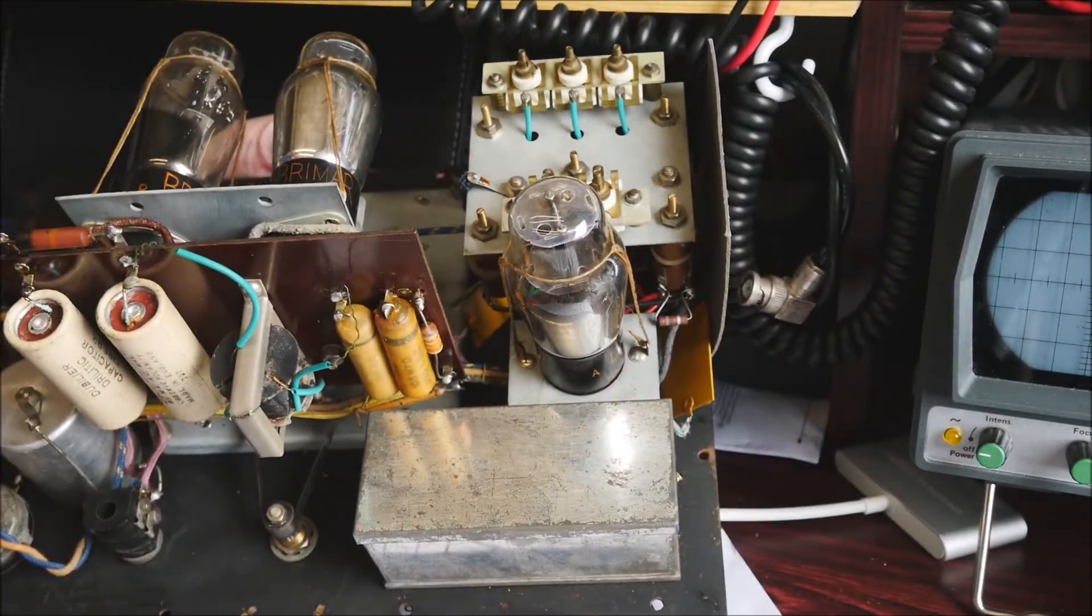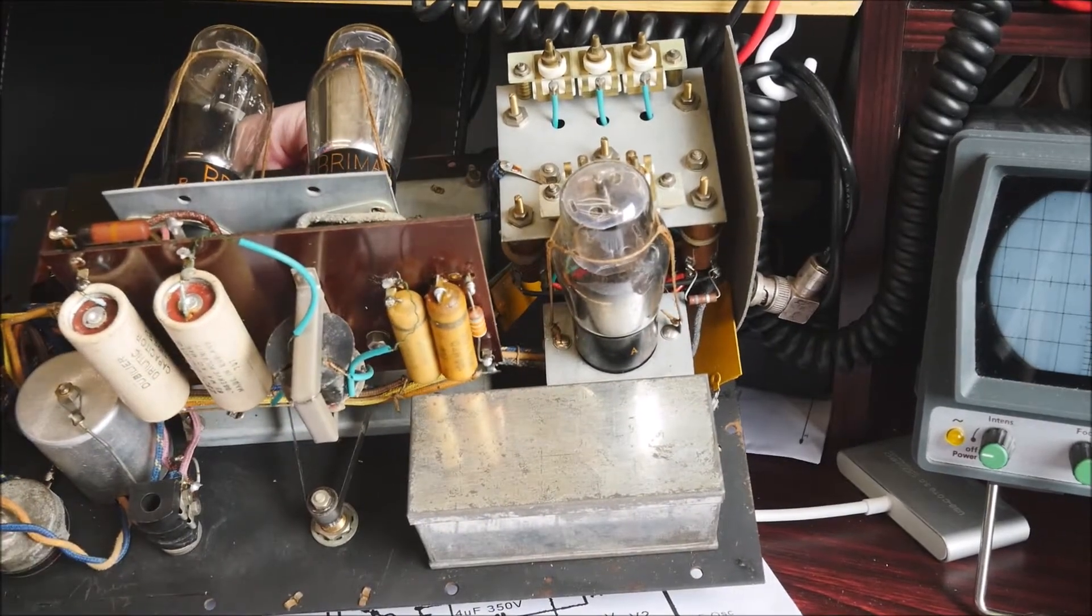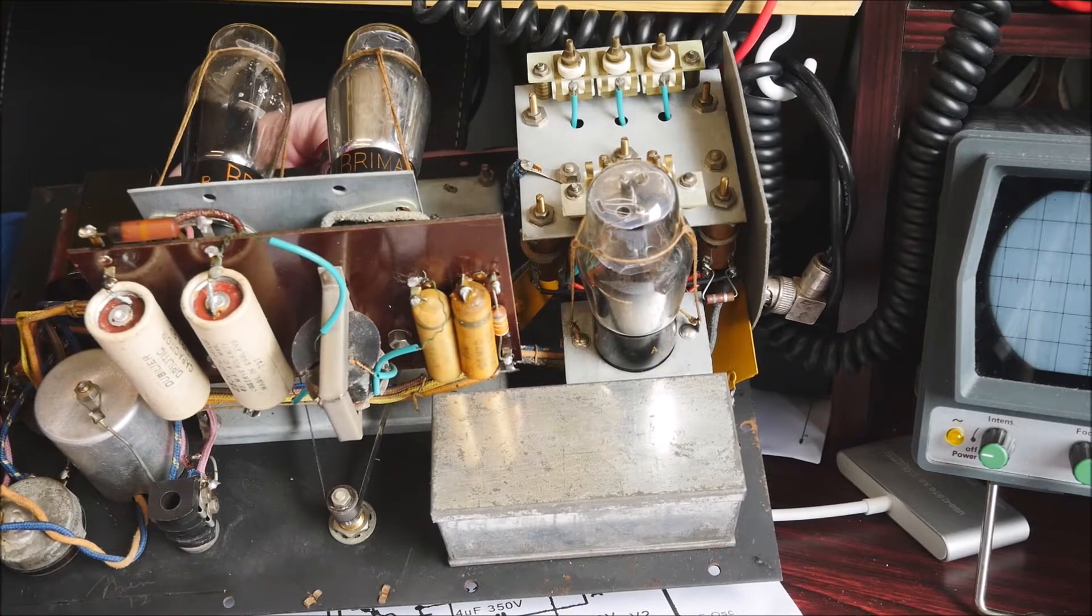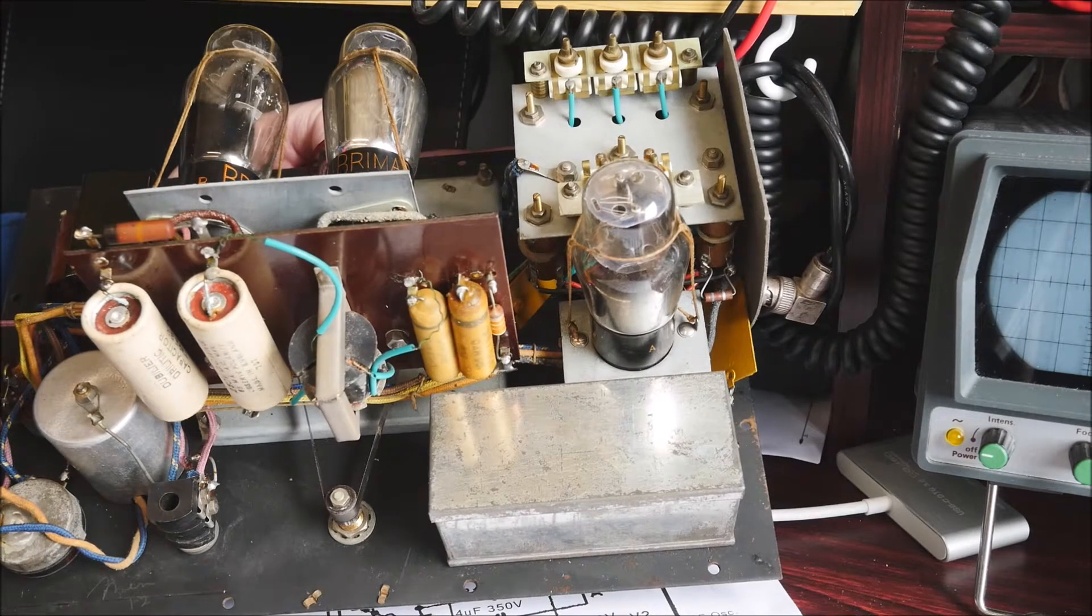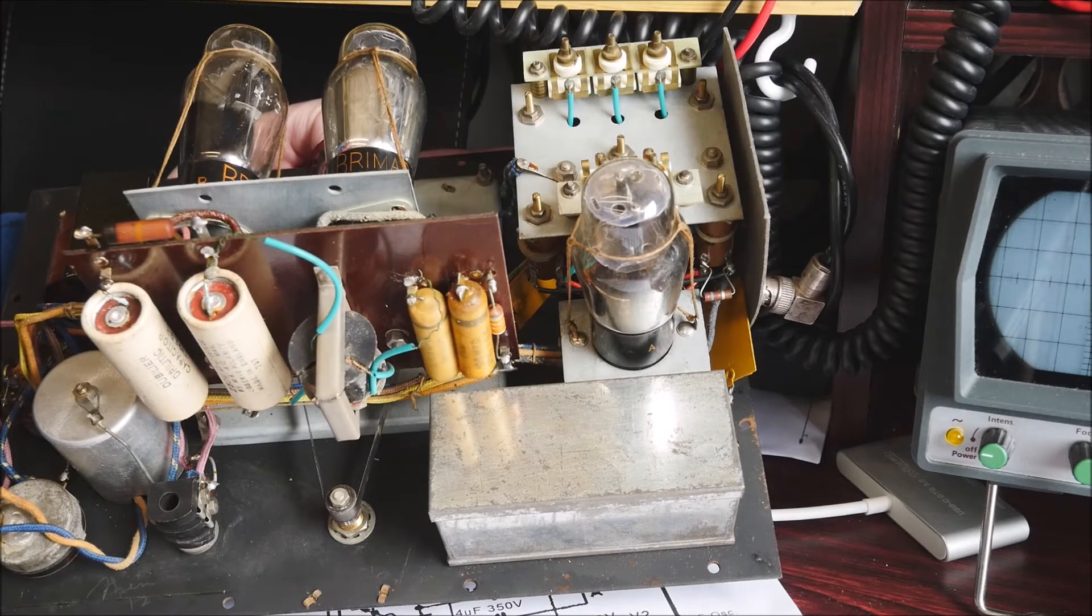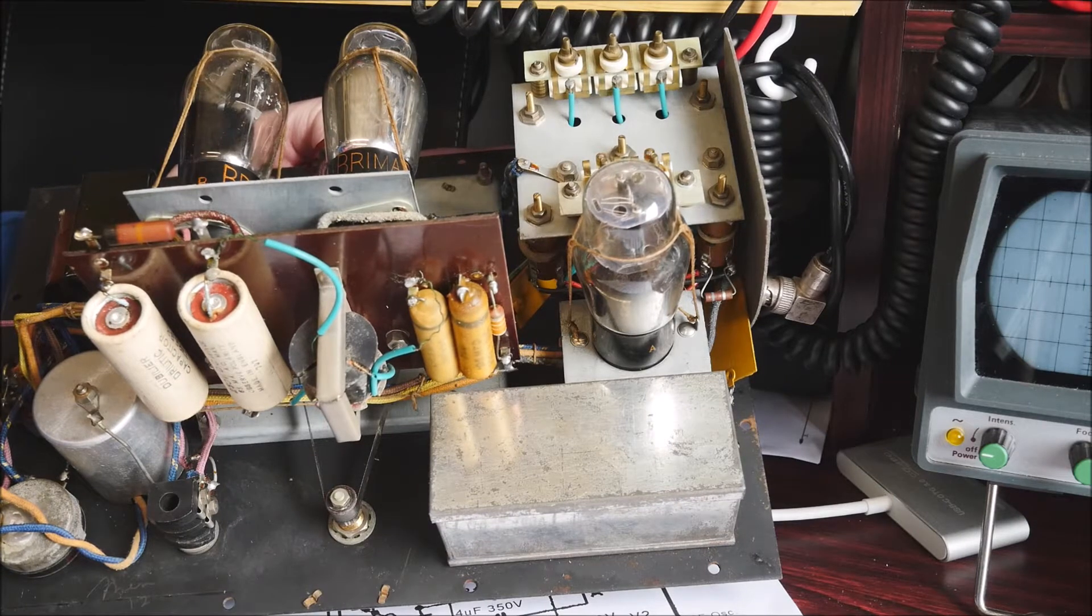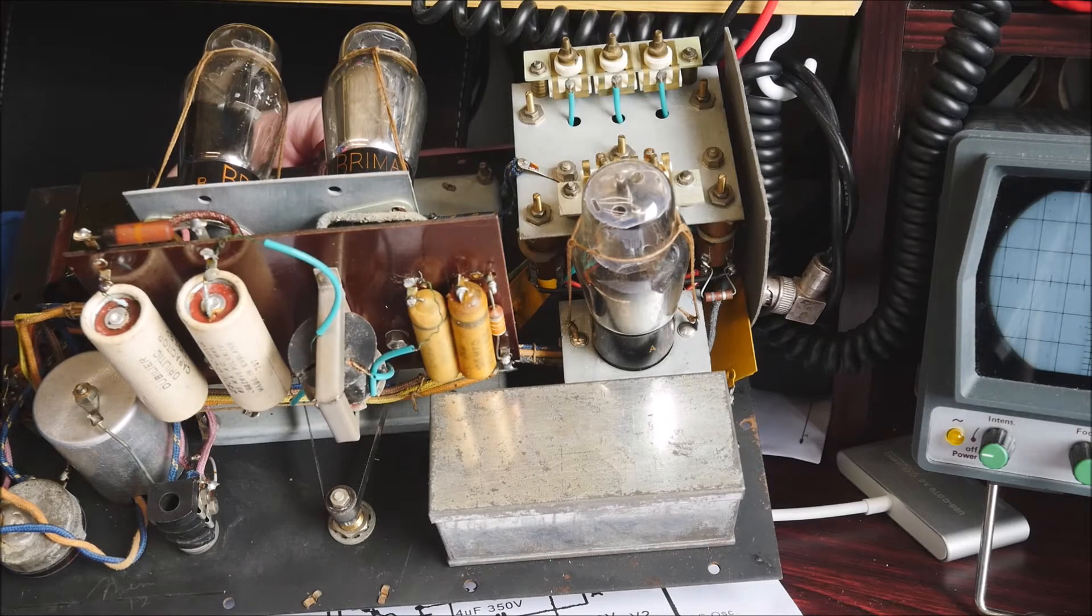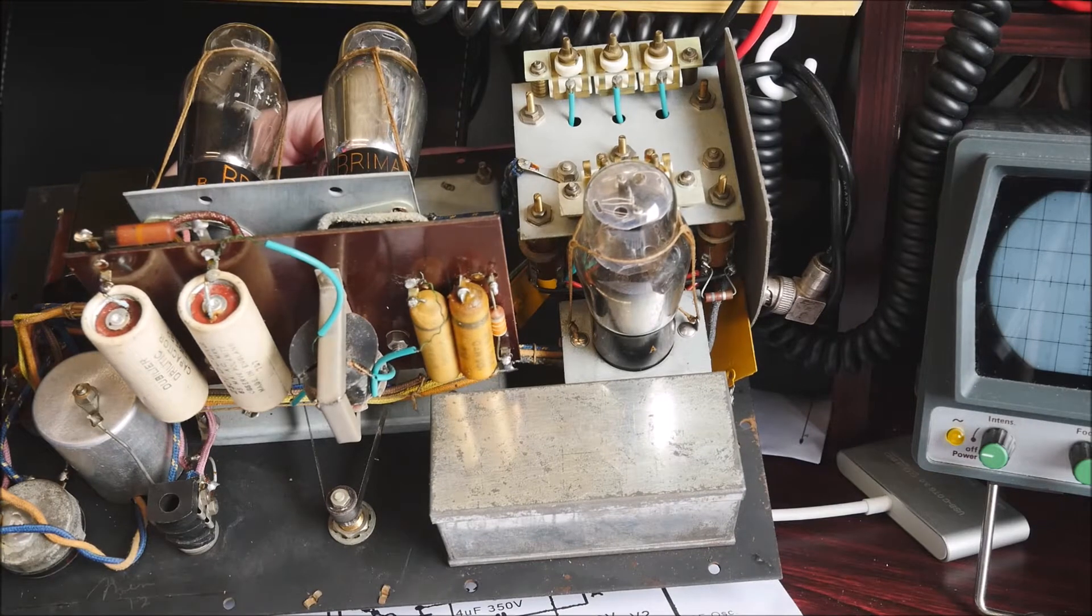So get the capacitors replaced, get that resistor replaced, just check a few things over, clean the switches, obviously replace this mains lead down here and make sure that it's replaced with three leads and that there's a good solid earth connection for the chassis. And then we'll bring it slowly up on a variac with current limiting and see if we can get the old beast back into life. Okay, I'll just pop it down now and get the circuit diagram and talk you through that.